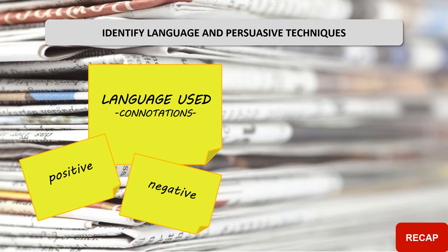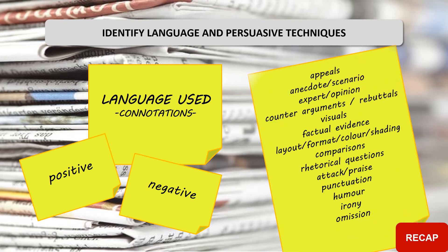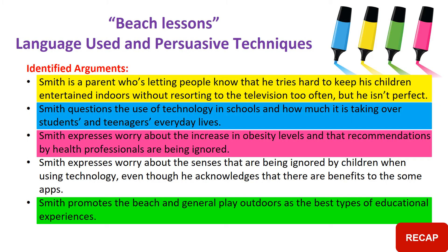The next thing we did was look at the language used that supported Smith's arguments — those arguments that we had identified. That means the next thing we're going to learn about is persuasive techniques, but we're going to continue to recap on the language. So you were asked to get four different colored highlighters or pencils or pens — highlighters are best — and highlight four of the identified arguments. Remember that anything we highlight in our article now gets the same color as the argument it's supporting.